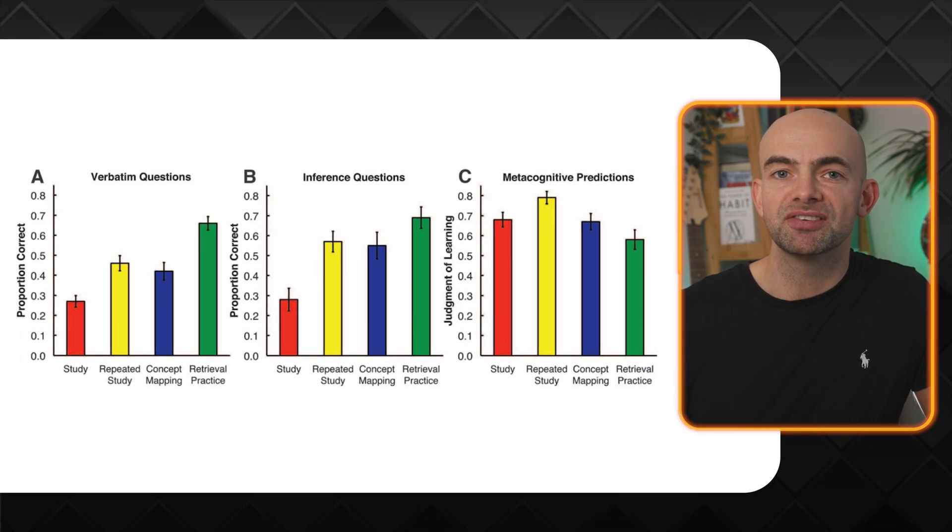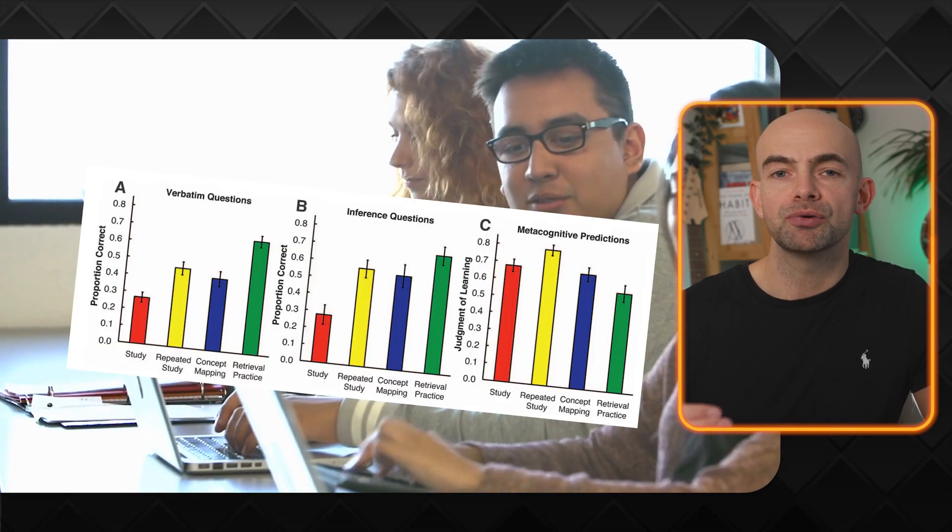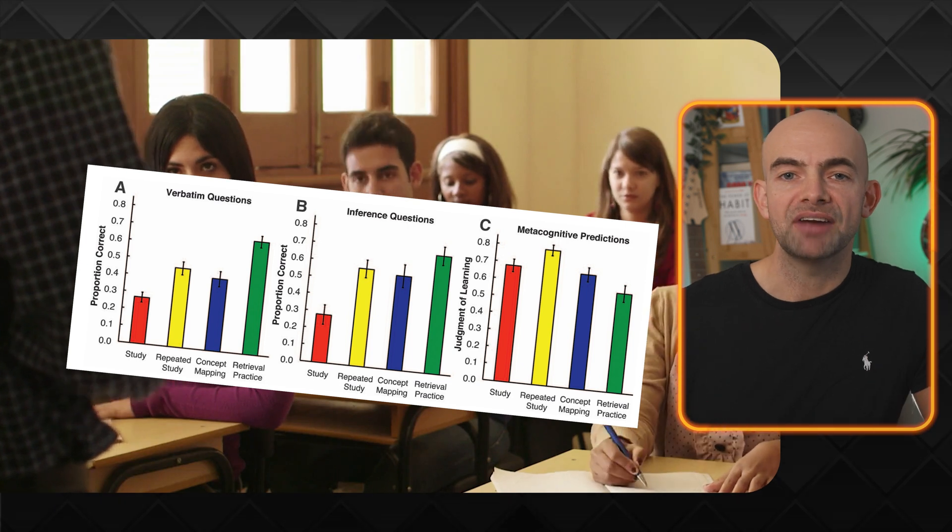Karpicke and Blunt's 2011 paper published in Science is probably the best evidence of the effectiveness of active studying. Researchers placed students into four groups with the same material. The first group read the material once, the second group read it four times, the third group read it and drew a mind map, and the fourth group read it once and then tried to recall as much as they could. In both a verbatim test and an inference test, the active recall group did much better than all the other groups combined. This study showed that testing yourself once is better than re-reading a chapter four times using ineffective methods.